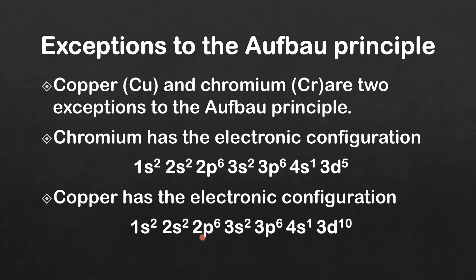Copper has the electronic configuration 1s2, 2s2, 2p6, 3s2, 3p6, 4s1, 3d10. So copper has a full 3d sublevel.